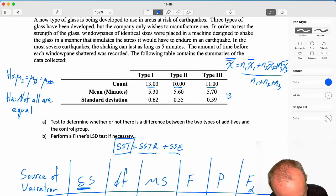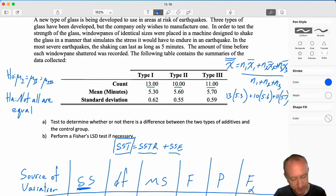This is going to be 13 times that first sample mean, plus the next one is 10 times its sample mean, the next one is 11 times its sample mean. We divide that by the total, 13 plus 10 plus 11, and so this gives me 13 times 5.3 plus 10 times 5.6 plus 11 times 5.7 divided by 13 plus 10 plus 11. So that gives me a grand mean equal to 5.518.